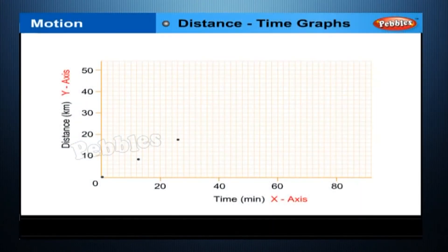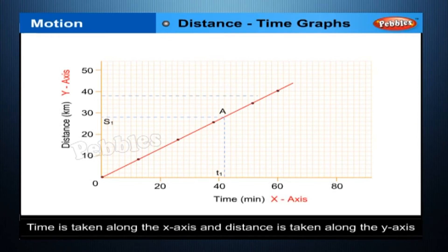Distance-Time Graphs. The change in the position of an object with time can be represented on the distance-time graph, adopting a convenient scale of choice. In this graph, time is taken along the x-axis and distance is taken along the y-axis. Distance-time graphs can be employed under various conditions where objects move with uniform speed, non-uniform speed, remain at rest, etc.